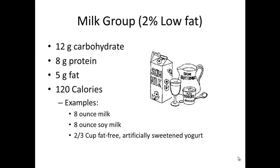In the milk group, a serving — usually one eight-ounce cup — has 12 grams of carbohydrate, 8 grams of protein, 5 grams of fat, and 120 calories. These are the numbers you need to memorize. Although there are two additional subgroups such as whole milk and skim milk, we're just going to stick with the 2% or low-fat values.